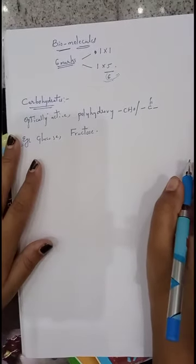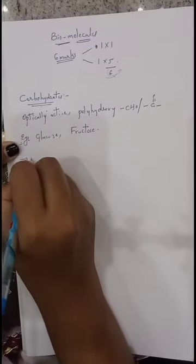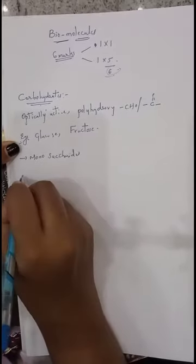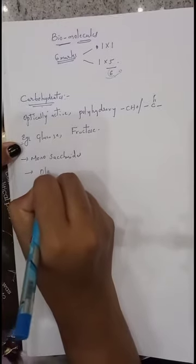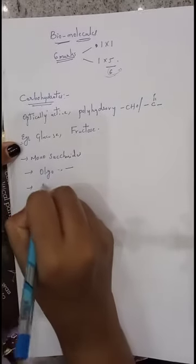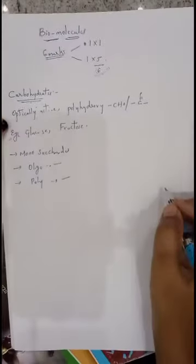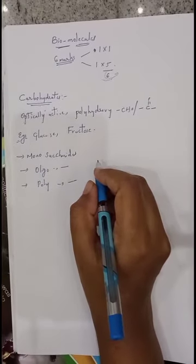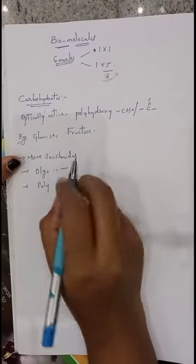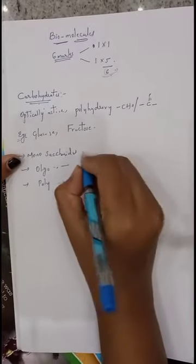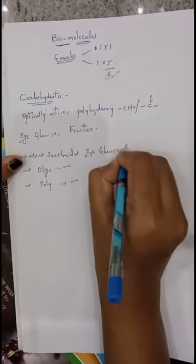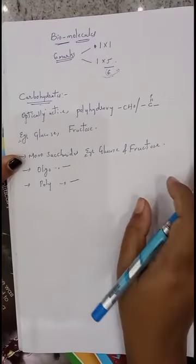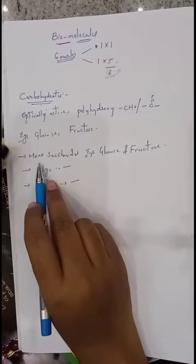These carbohydrates are again classified into three important types. The first type is monosaccharides. Monosaccharides cannot give any further carbohydrates on hydrolysis. They are the simplest carbohydrates which cannot be further hydrolyzed. Examples are glucose and fructose. These two are the simplest carbohydrates and on further hydrolysis they do not give any further carbohydrates. So we can call them monosaccharides.